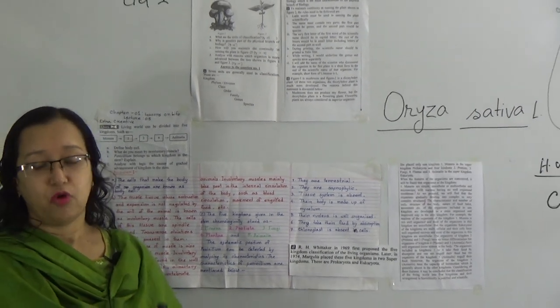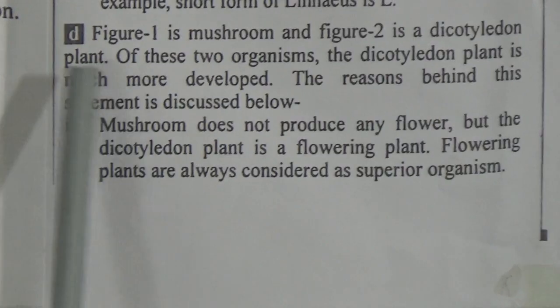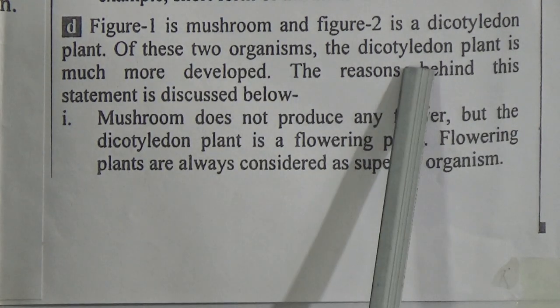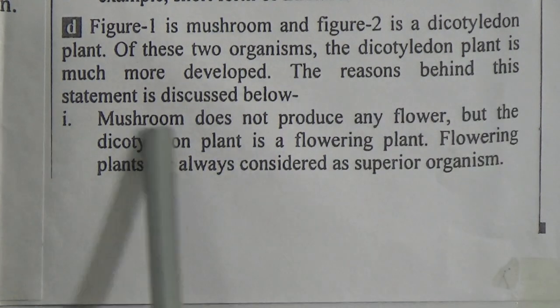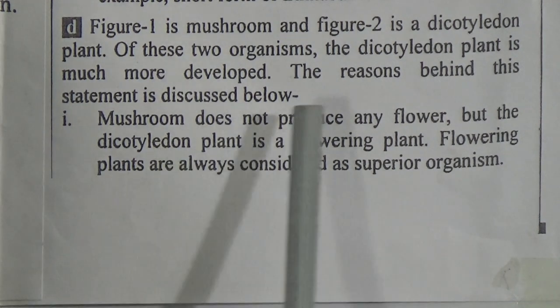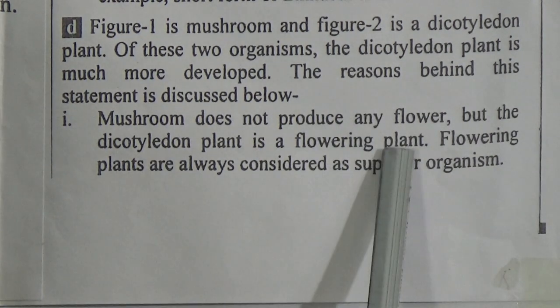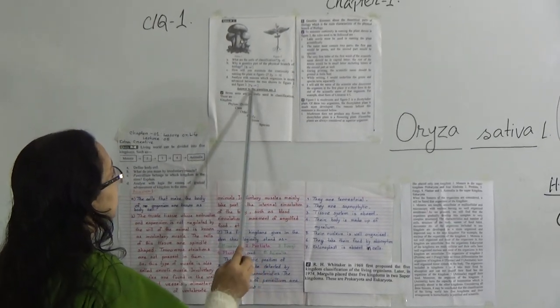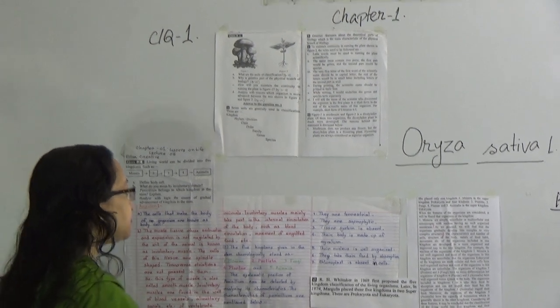Question (d): Analyze with reason which organism is more advanced between the two shown in figure one and figure two. You will find this answer on page number 9. Figure one is a mushroom and figure two is a dicotyledon plant. Between these two organisms, the dicotyledon plant is much more developed. Reason: mushroom does not produce any flower, but the dicotyledon plant is a flowering plant, and flowering plants are always considered superior organisms. Collect the remaining differences from page 9 — this is your homework. Now we will discuss the extra question.